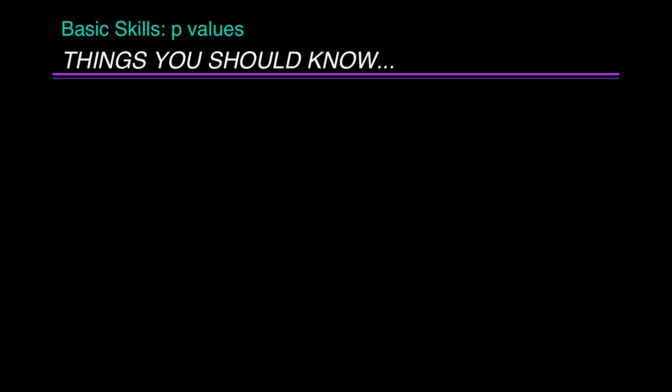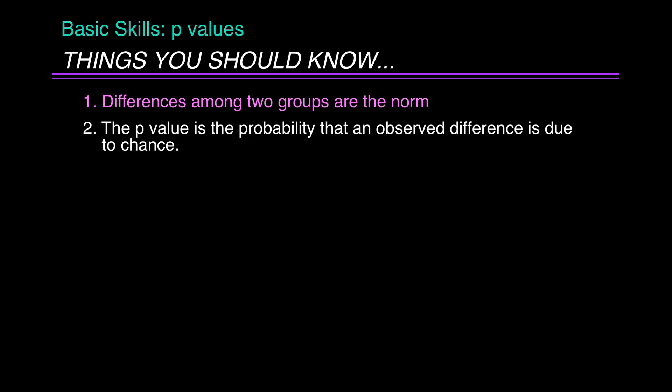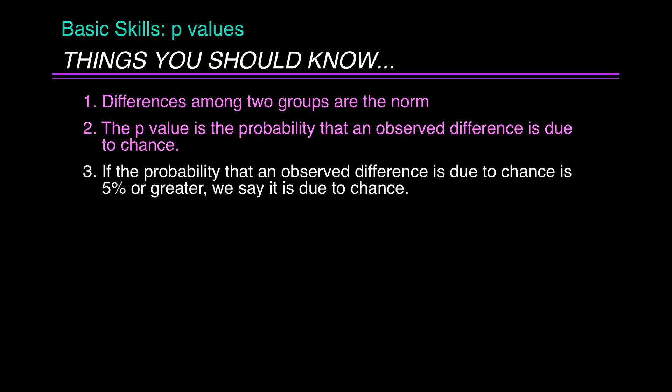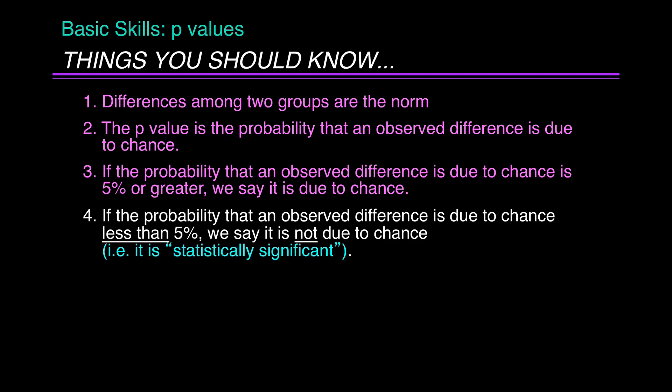So here are the things you should know. First, differences among two groups are the norm. Second, the p-value is the probability that an observed difference is due to chance. Third, if the probability that an observed difference is due to chance is 5% or greater, we say it is due to chance. And fourth, if the probability that an observed difference is due to chance is less than 5%, we say it is not due to chance, i.e., it is statistically significant.